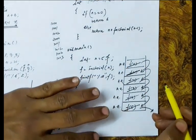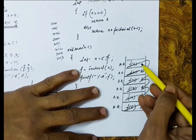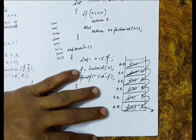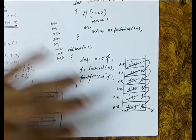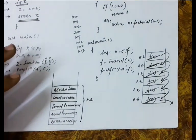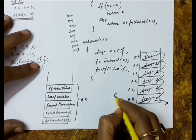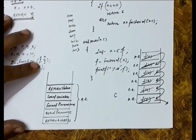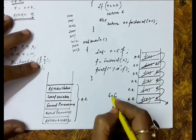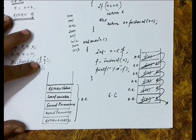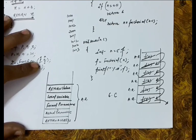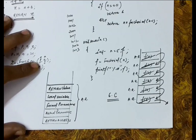At maximum, how many activation records are pending? 1, 2, 3, 4, 5, 6. So we are finding the factorial of 5 and 6 activation records are pending at maximum at any point of time. If we consider that every activation record takes a constant space — let us say the space taken by an activation record is C — then in this case, 6 into C space is reserved in the stack region. This is an overhead and extra space is consumed, causing space complexity for us.